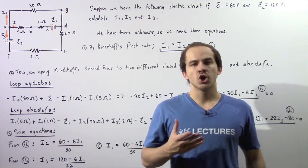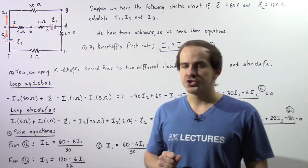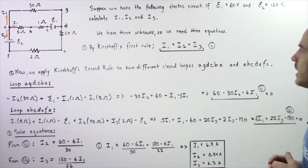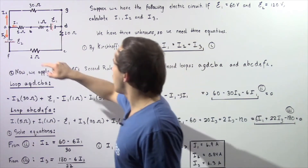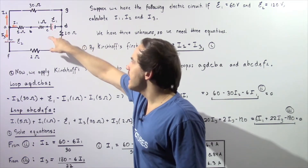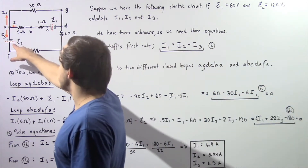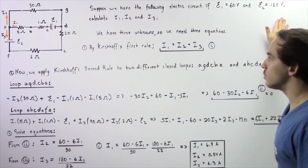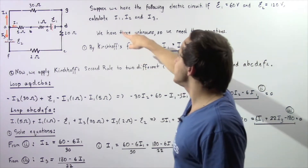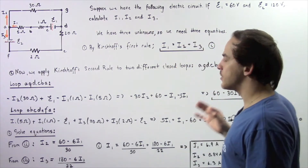In the previous lecture we discussed Kirchhoff's first and second rule. Now we're going to apply these two rules to solve the following electric circuit problem. We have resistors and two batteries: battery number one has an electromotive force of 60 volts and battery number two has an electromotive force of 120 volts. Using Kirchhoff's rules we want to calculate electric currents I1, I2, and I3.